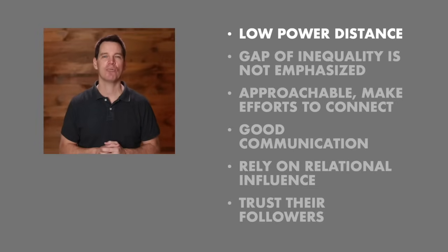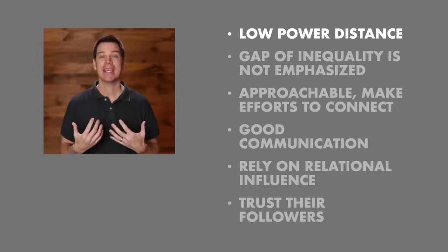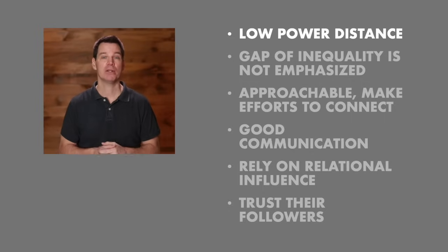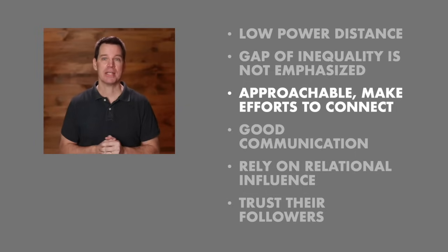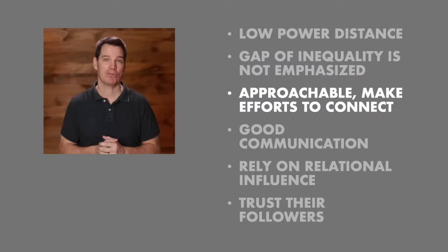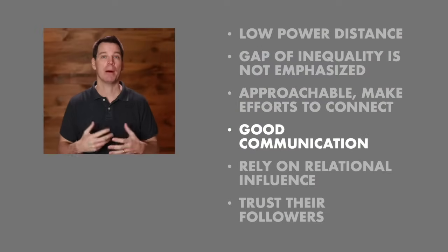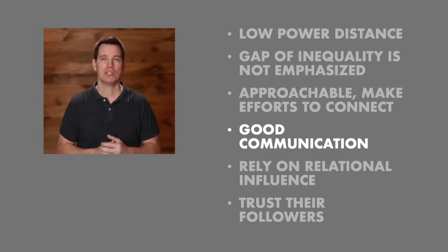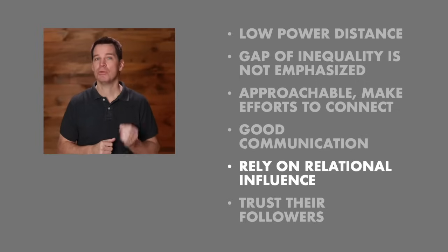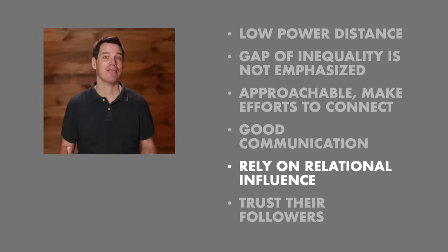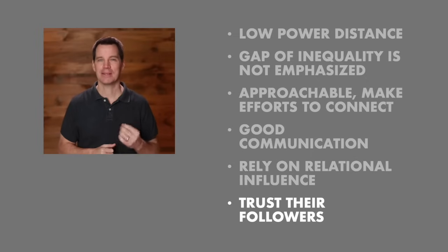In terms of power distance, democratic leaders tend to have more equal relationships with followers, establishing a low power distance compared to autocratic leaders. Democratic leaders are more approachable and friendly, making efforts to connect with followers — asking about their projects and lives outside of work. They still have what French and Raven call legitimate power tied to their position, but they don't emphasize it. They tend to rely more on mutually beneficial relationships to have influence and trust their followers to provide helpful feedback and make good decisions.